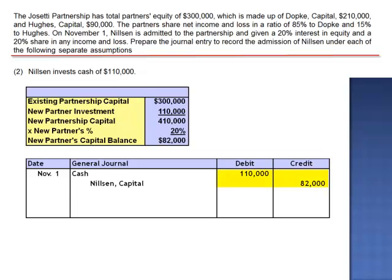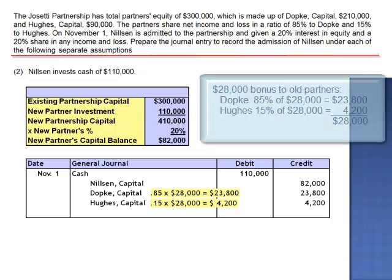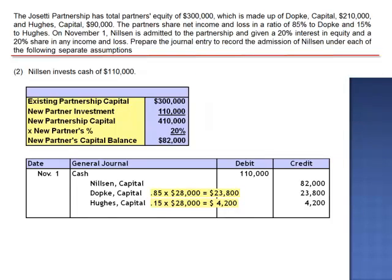The difference between the $110,000 and the $82,000 is referred to as a bonus. The total bonus is $28,000. Dopke's capital account will be credited for 85% of the $28,000 bonus, which is $23,800, and Hughes's capital account will be credited for 15% of $28,000, which is $4,200. The term bonus is unfortunate because it makes it look like Nilsen is giving something away — the fact that Nilsen is willing to pay $110,000 to become a 20% partner indicates that the assets and equity of the partnership had previously been understated.